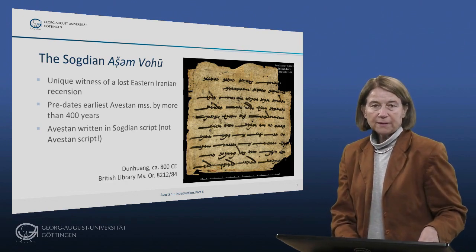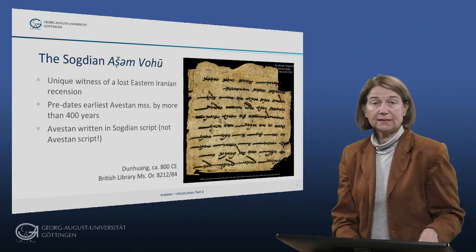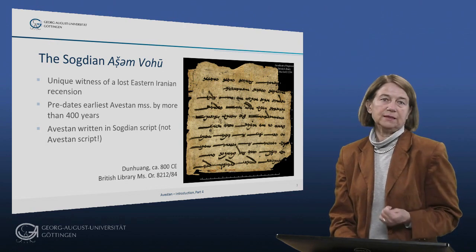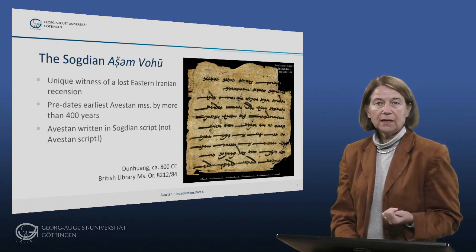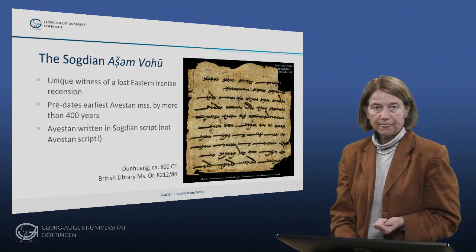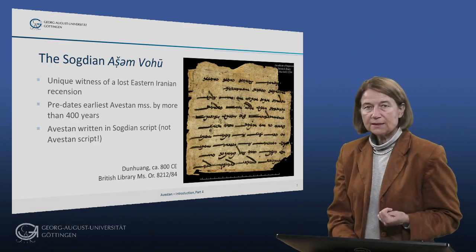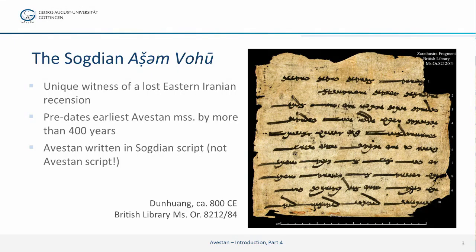The oldest manuscript containing an Avestan text, however, is not written in the Avestan script but in the Sogdian script. This is a unique witness testifying to the wide use of the Avestan texts all over Iran. This manuscript predates our extant Avestan manuscripts by more than 400 years and testifies to Avestan being written in another script than the Avestan script.